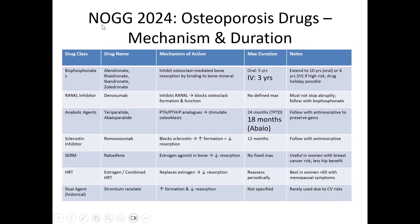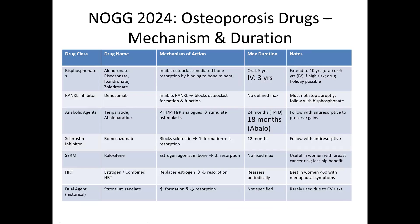Here's a quick overview of osteoporosis drugs, their mechanism, and duration of action as per the NOG guidelines. First, looking at bisphosphonates — the most commonly used class — mainly alendronate, risedronate, ibandronate, and zoledronate. These inhibit osteoclast-mediated bone resorption by binding to bone mineral. The maximum duration for oral bisphosphonates is around five years, and for IV it's around three years.